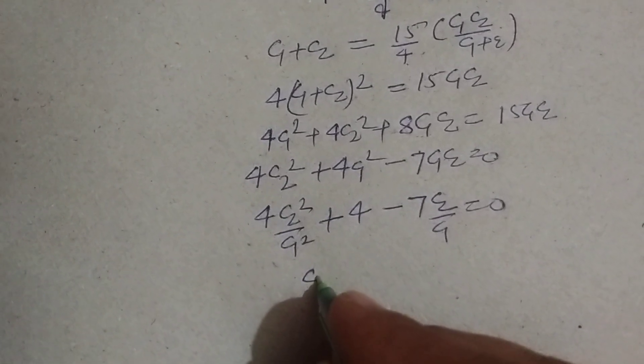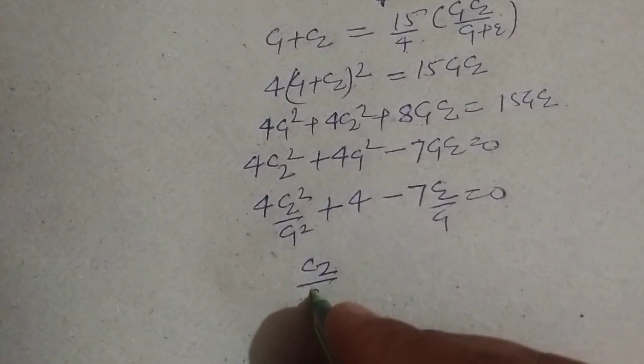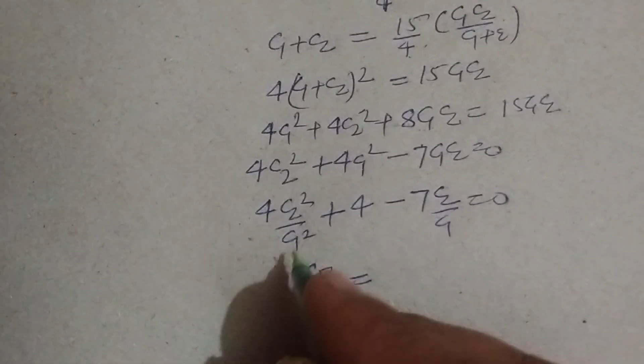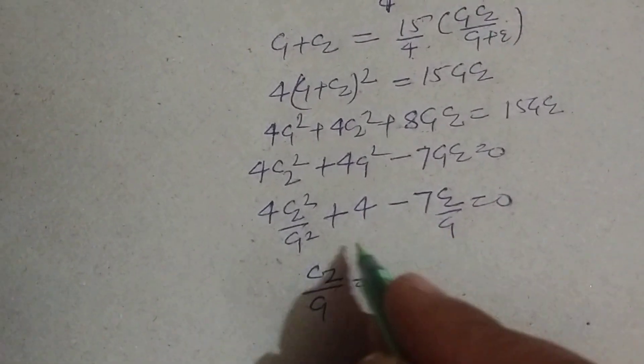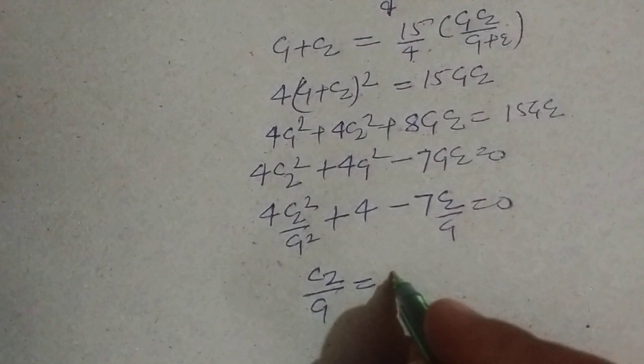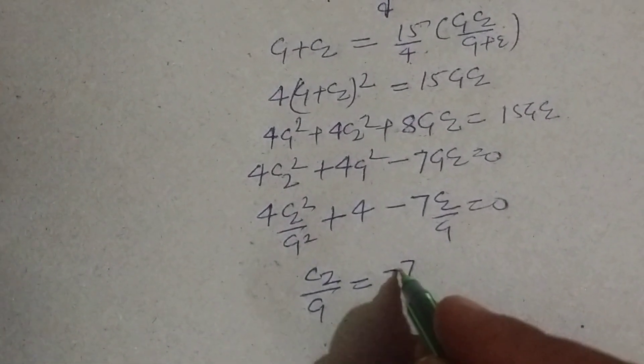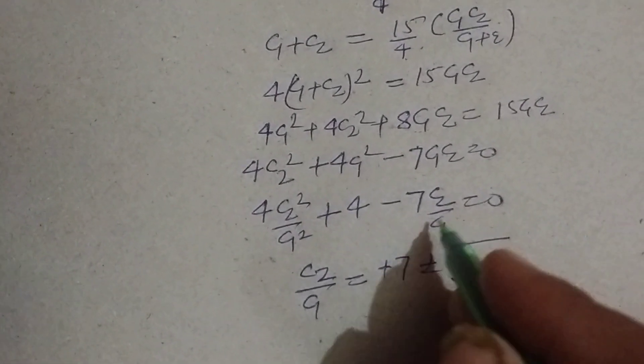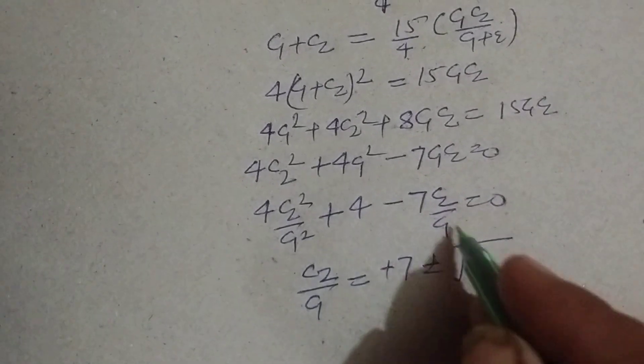Here, C2 over C1 equal to minus B, minus B is 7, so plus 7, B square, B is 7, 49,